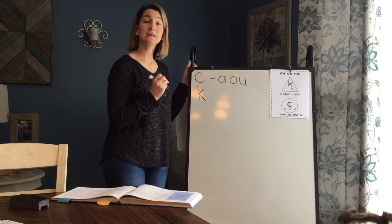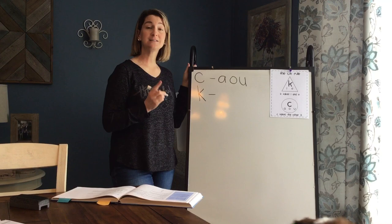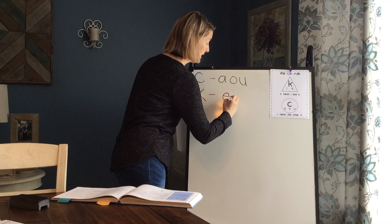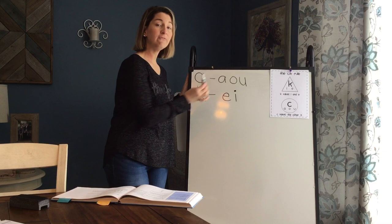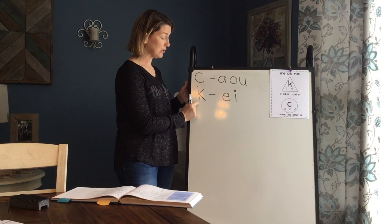Now, the other letter that makes the kk sound is the letter K. Now, we can know to use the letter K to spell a word if in the word the vowel is an E, or if in the word the vowel is an I. If the word has an E or an I vowel sound, and it starts with the sound kk, you know to start it with the letter K.